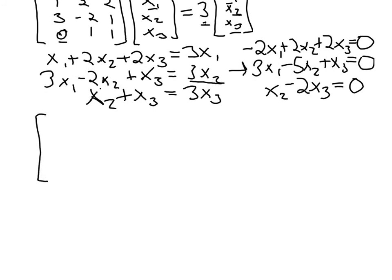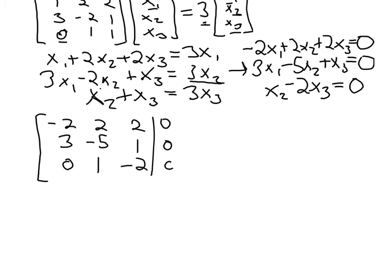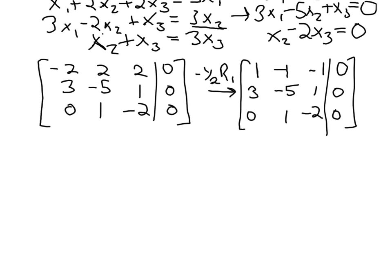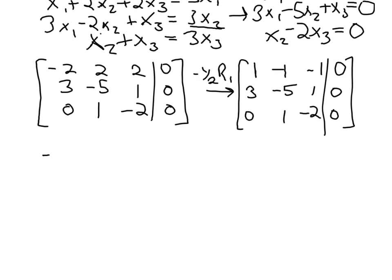We solve this system with an augmented matrix. The first row corresponds to the first equation, followed by the second and third rows. To get a one in the top-left entry, since we have twos across row one, we do negative one-half times row one, making those entries negative ones. Then we perform a row operation — negative three times row one added to row two — to turn the three into a zero.